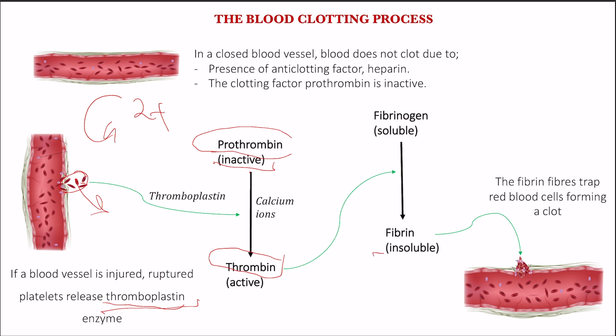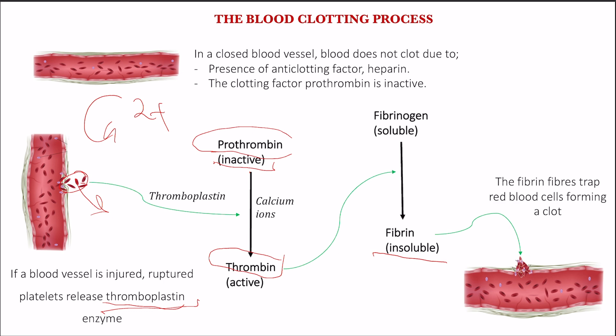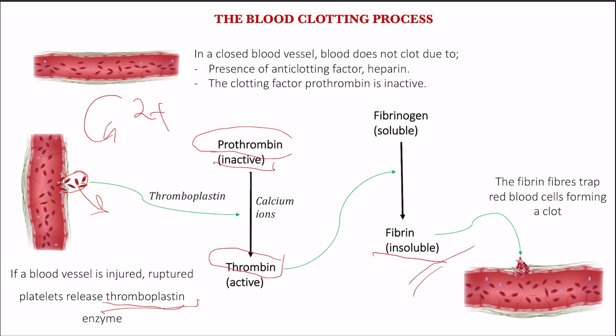What then is the role of thrombin, this active enzyme? That is where fibrinogen comes in. Fibrinogen is the soluble protein. Thrombin, as an active enzyme, converts fibrinogen from a soluble form to an insoluble form, which is known as fibrin. When we talk of fibrin, think of fibers — the fibrins are insoluble and appear like fibers, and these fibers form a mesh on the injured part of that blood vessel.